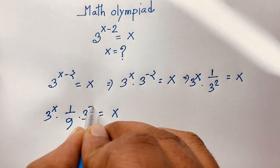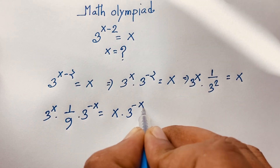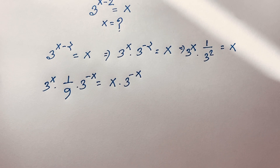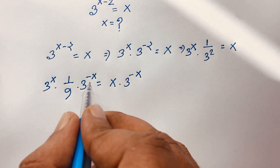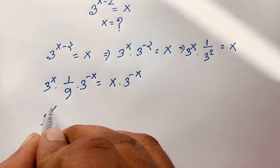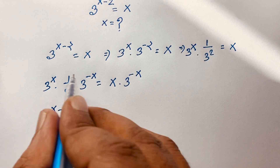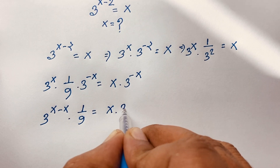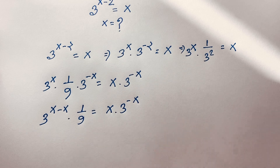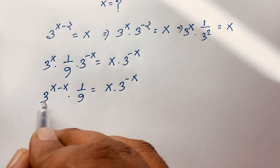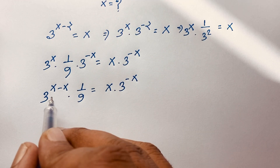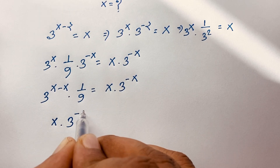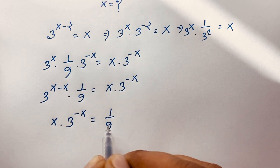Now I multiply both sides by 3 to the power minus x. On the left side, 3 to the power x times 3 to the power minus x gives 3 to the power x minus x, which is 1. So we find: x times 3 to the power negative x is equal to 1 over 9.